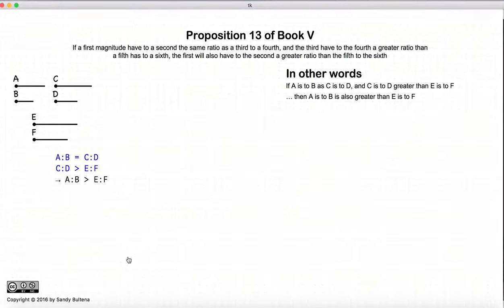So let's begin this proposition. If we have three ratios, a to b, c to d, which are equal, and c to d, compare it to e to f, c to d is greater than e to f, then we also have that the ratio a to b is also greater than e to f. And here are our initial conditions.